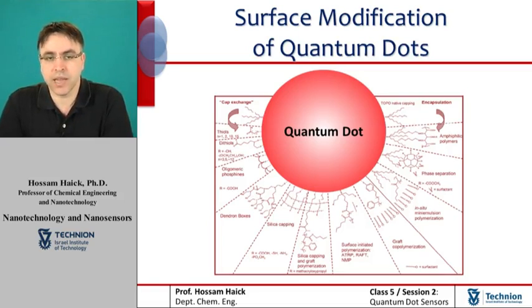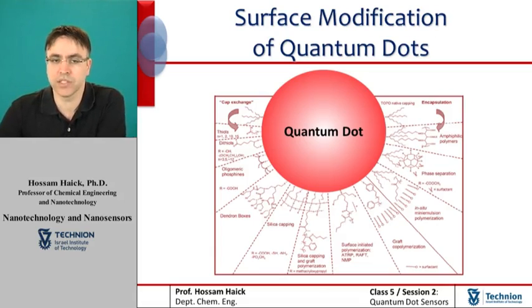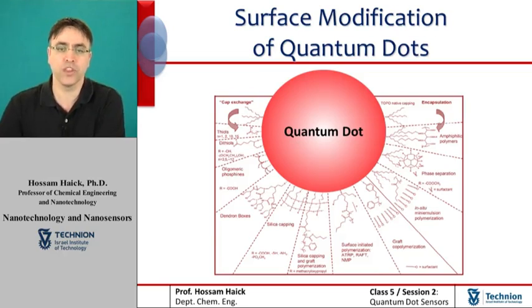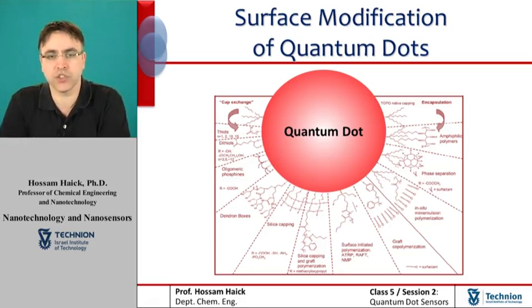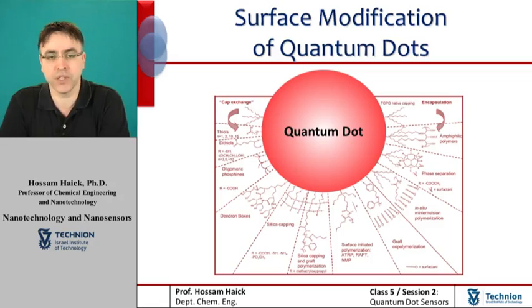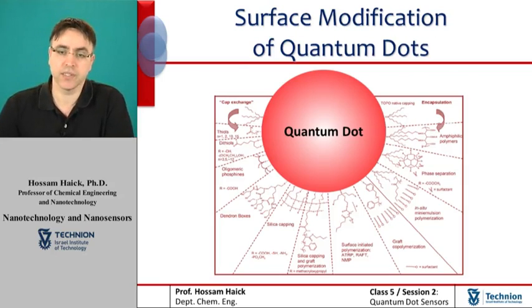Different methods to stabilize the luminescence properties of semiconductor quantum dots in aqueous media have been reported in the scientific literature. These include surface passivation with protective layers such as proteins, and the coating of quantum dots with protective silicon oxide films, polymer films, etc. An additional method to produce water-soluble quantum dots relies on the exchange of native organic ligands linked to the quantum dots, such as TOPO, with other ligands. The most common examples of binding groups are thiols, phosphines, and amines.